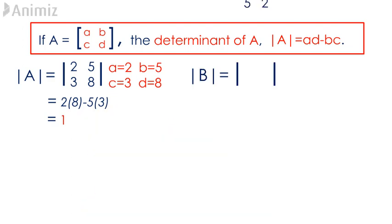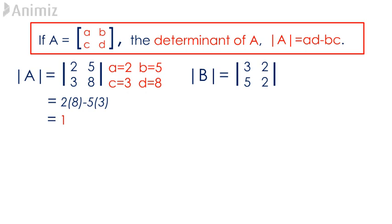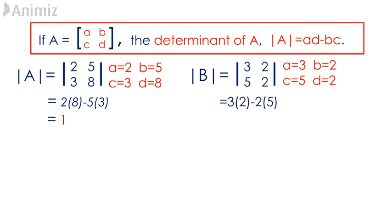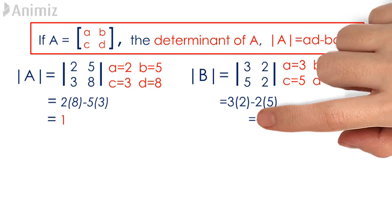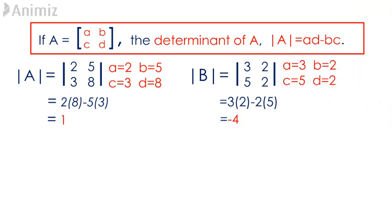The determinant of B is calculated in the same manner using AD minus BC. Here, A is 3, B is 2, C is 5, and D is 2. The product of 3 and 2 minus the product of 2 and 5 gives us the value of the determinant of B to be negative 4.